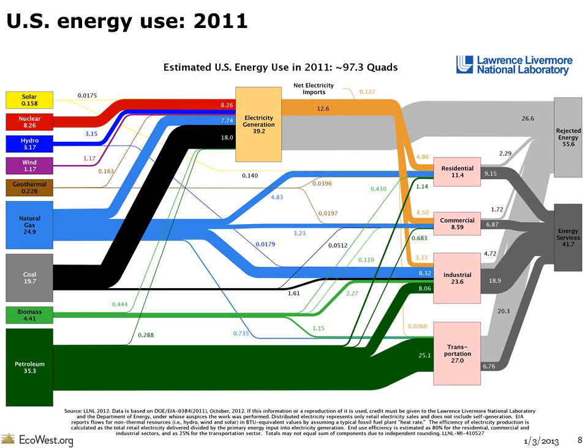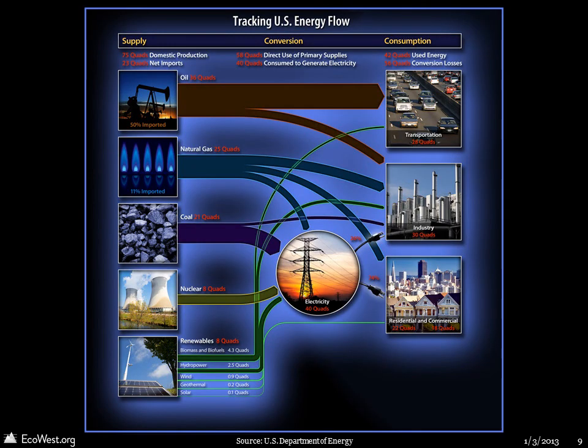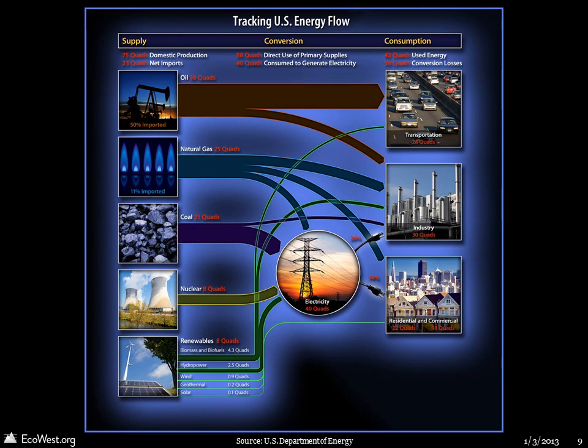Besides being used to fuel power plants, natural gas is used directly in homes, businesses, and factories. Here's another Sankey diagram for US energy flows that was created by the Department of Energy. This version includes some interesting facts and statistics in the margin.